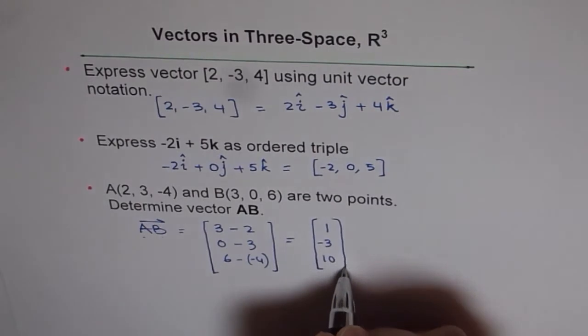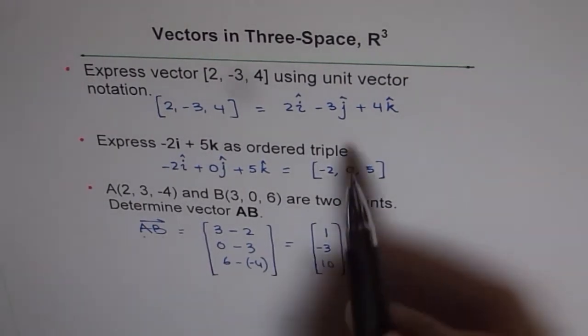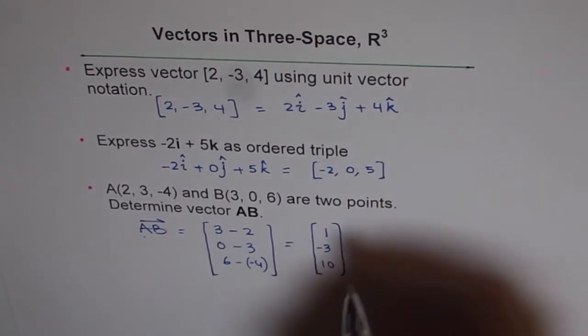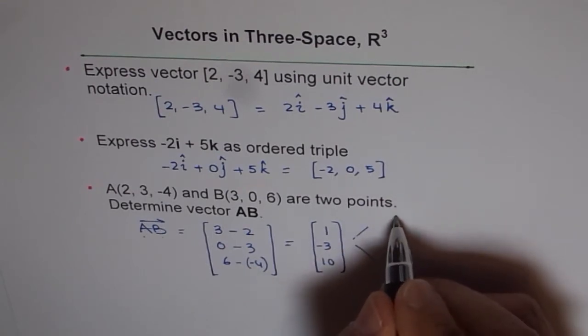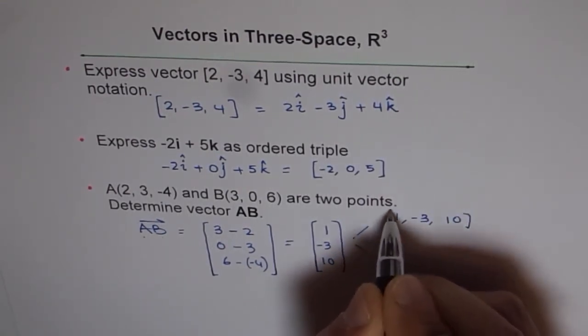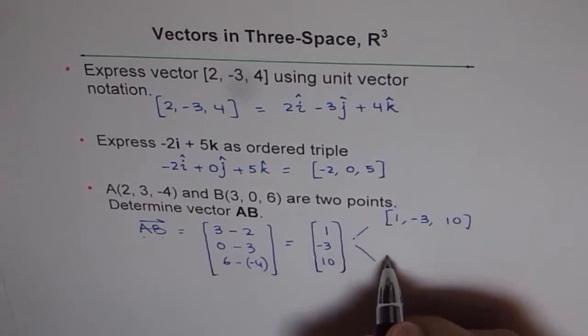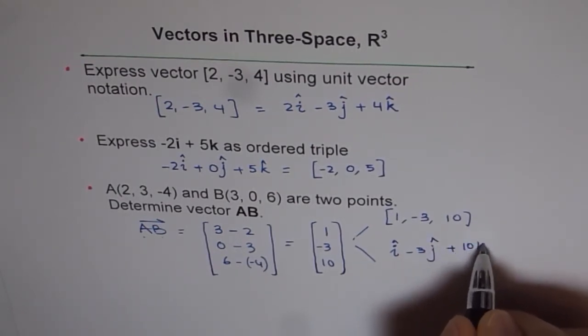So vector AB is [1, -3, 10]. Now this could be written in previous two formats. Like I could write this as either (1, -3, 10), this is ordered triple, or I can write this as i - 3j + 10k.